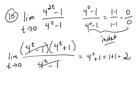kind of having to recognize that 4 to the 2t is actually a perfect square, it's 4 to the t quantity squared. So that was perfect.